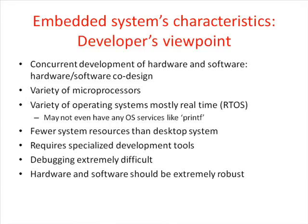Embedded system characteristics from a developer's viewpoint include concurrent development of hardware and software (co-design), and a variety of microprocessors to consider: ARM, Intel, Atmel, Motorola, Texas Instruments, Zilog, Renesas, and others. There is also a variety of operating systems to consider: VxWorks, MicroC/OS, QNX, Embedded Linux, RTLinux, eCOS, uC/OS, Linux, and many other real-time operating systems.